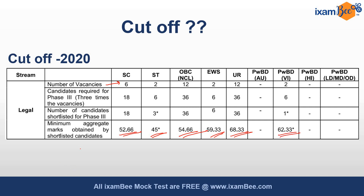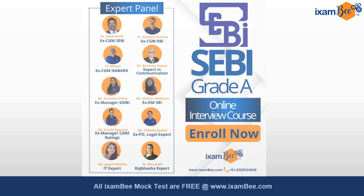Last year vacancies were 36 as per this data. This year there are only 16 vacancies. So even if the exam was comparatively difficult, the cutoff will remain in the same range. Now, what you can do in the upcoming days till you get the result?